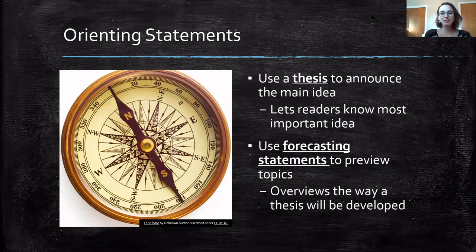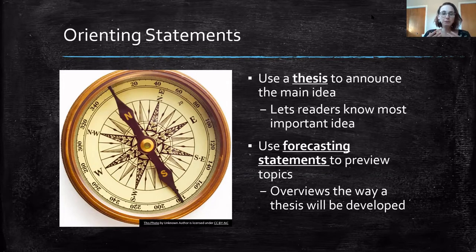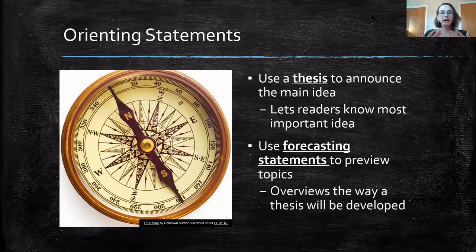The next type of orienting statement is a general forecasting statement, which previews the topics. A forecasting statement is often a topic sentence that guides readers back to the thesis statement, or it might be a general preview where you say, 'We'll talk about this later,' or 'I'm going to talk about this, then this, then that,' so the reader knows the order. In general, a forecasting statement overviews how the thesis is going to be developed.